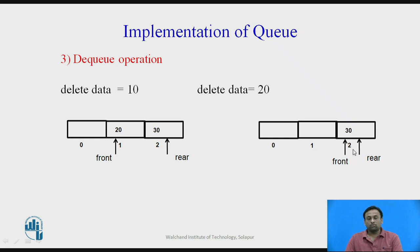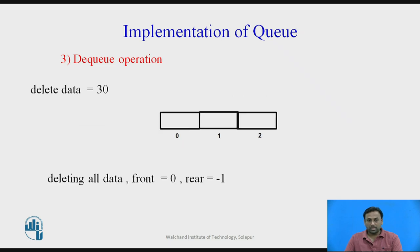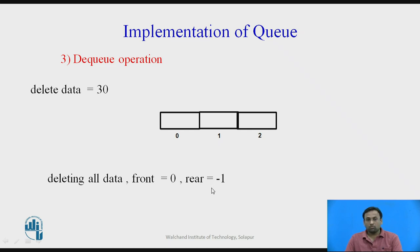If you delete one more time, that is delete 30, the queue becomes empty. The front and rear will point towards the initial positions: front equal to 0 and rear equal to minus 1. This means the queue is now automatically in an empty state and front and rear are re-initialized to that condition.